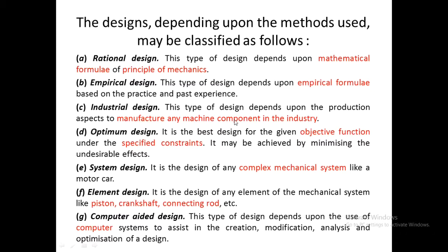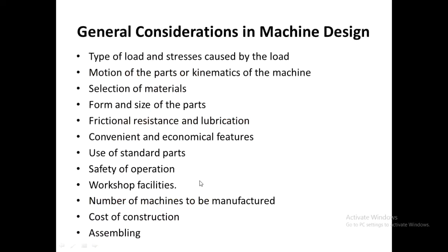Optimum design is a design with a function of either minimizing cost or maximizing efficiency under specified constraints. System design is a design of a complex system such as a car, bike, or tractor. Element design is a design of small elements within the system, such as a piston, crankshaft, connecting rod, brake system, or accelerator. Computer-aided designing is the use of a computer for the creation, modification, and optimization of the design.